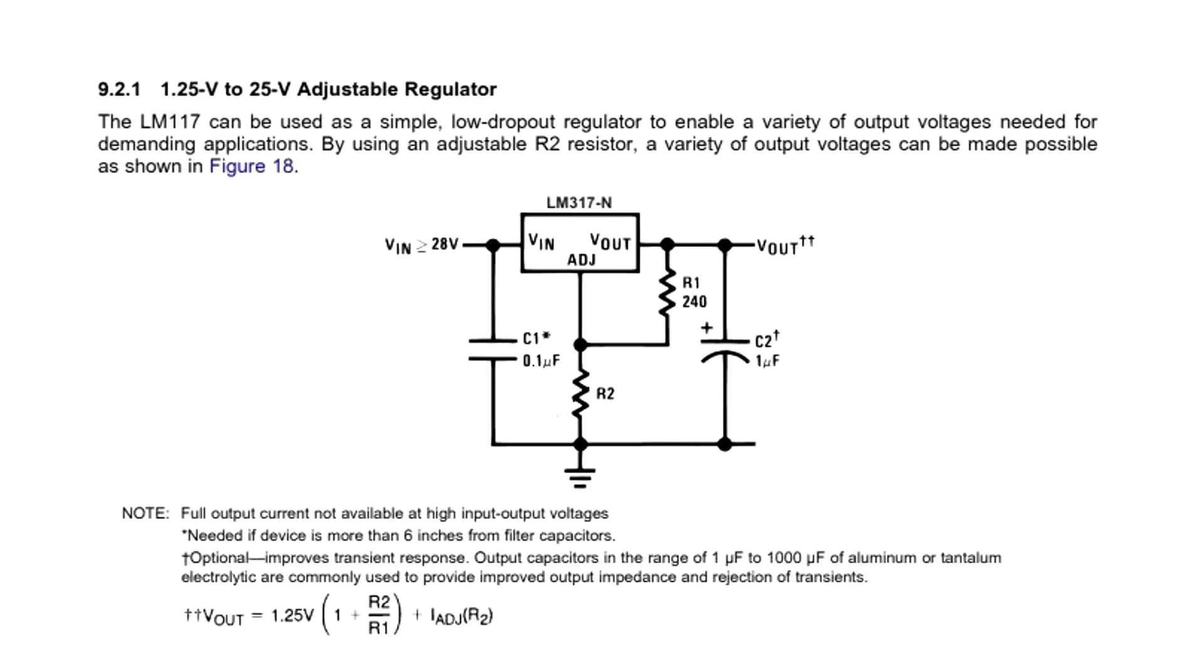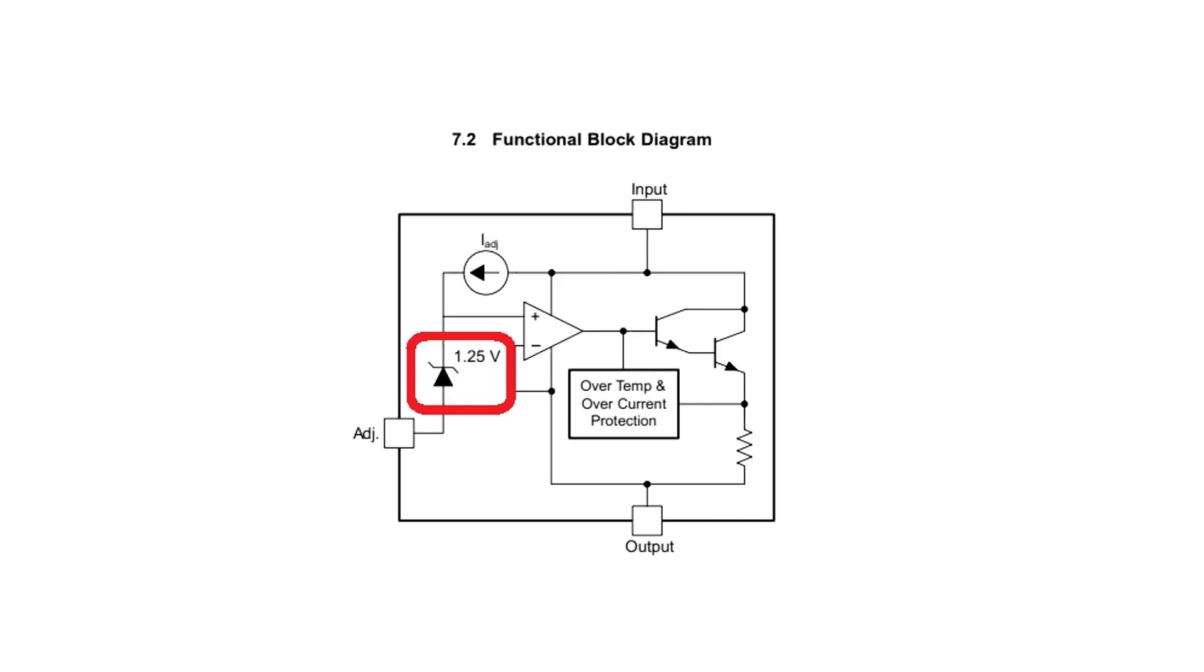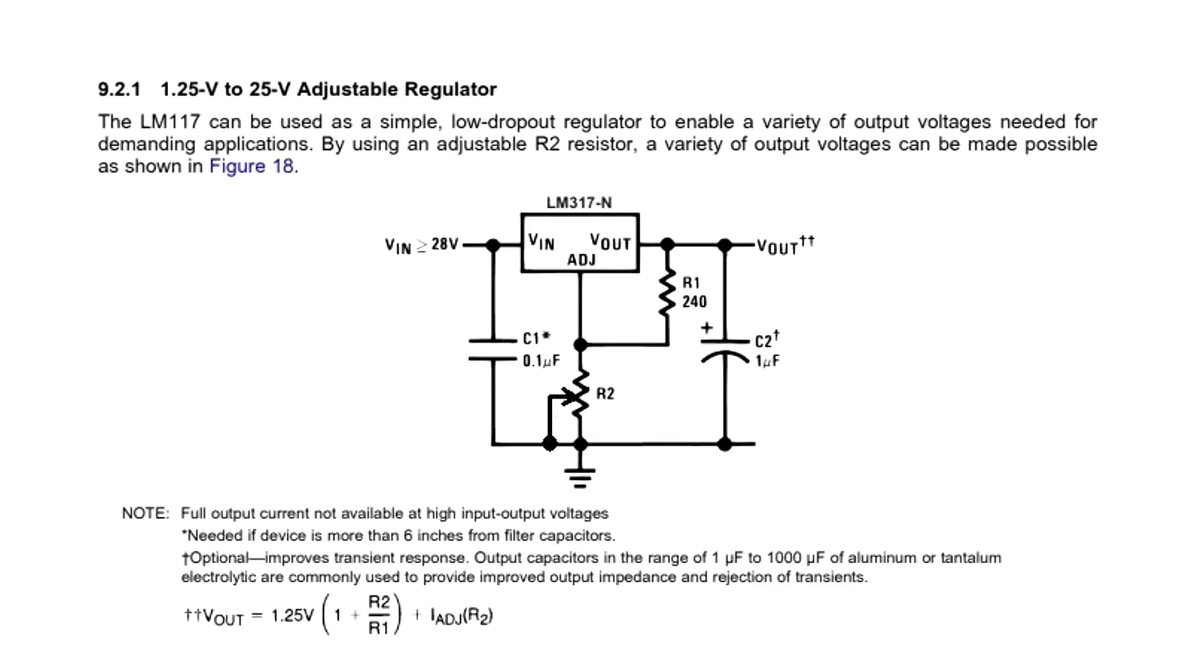A classic voltage regulator on the LM317 looks as follows. The chip monitors the output voltage through a resistive divider and compares it with the reference. By changing the resistance of the divider resistors, we have the ability to change the output voltage.